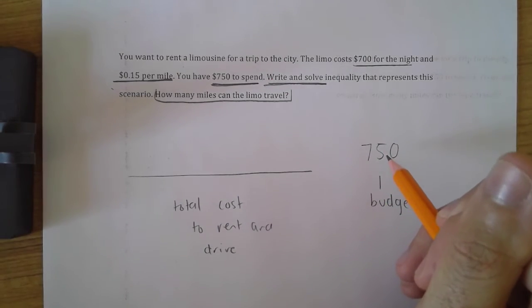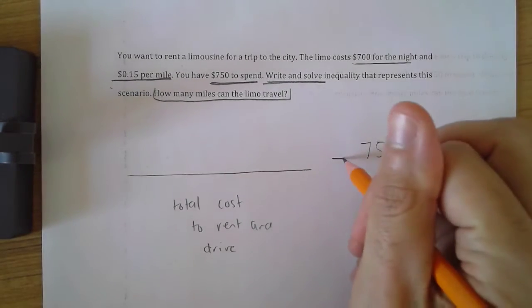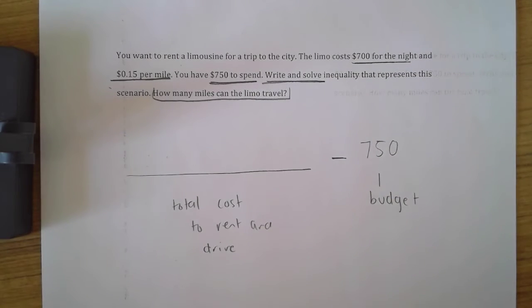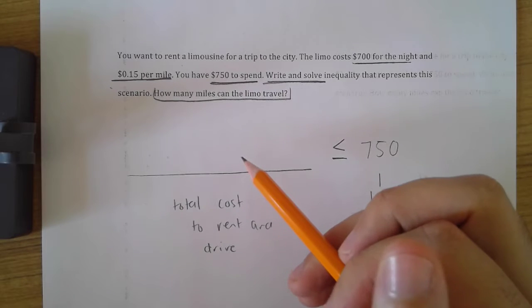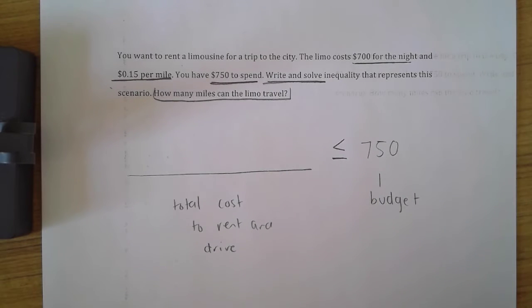It cannot be greater than $750. It could be equal to $750, but it cannot be greater than, which is why we have this inequality where the left side can be at most $750.